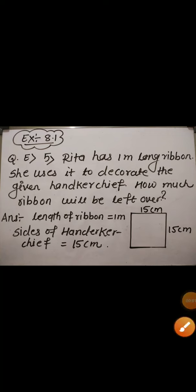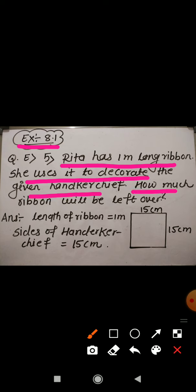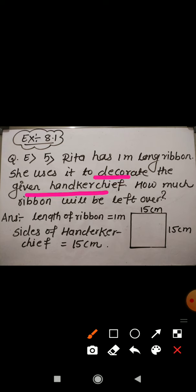Students, now we come to the fifth word problem of Exercise 8.1. Rita has a 1 meter long ribbon. She uses it to decorate a handkerchief. We are given that the total length of the ribbon is 1 meter, and Rita uses the same ribbon to decorate the handkerchief.